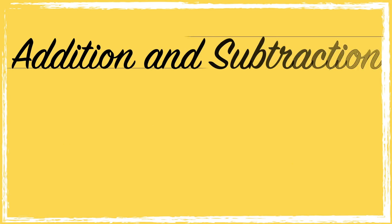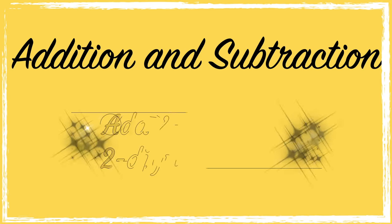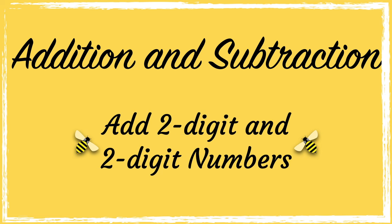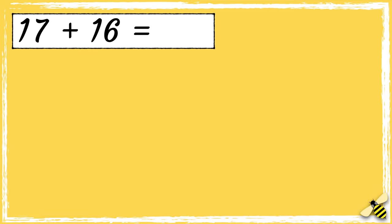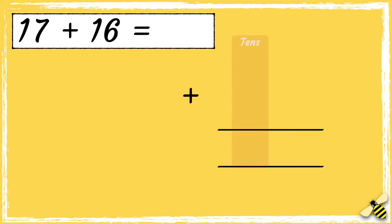In today's video we're going to use column addition to add two-digit and two-digit numbers. Here is a number sentence: 17 add 16. It's really important to line the numbers up correctly when you're doing column addition, so we have the tens in one column and the ones in another column.